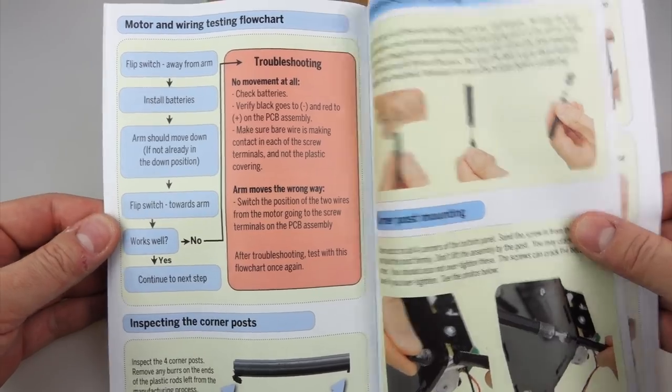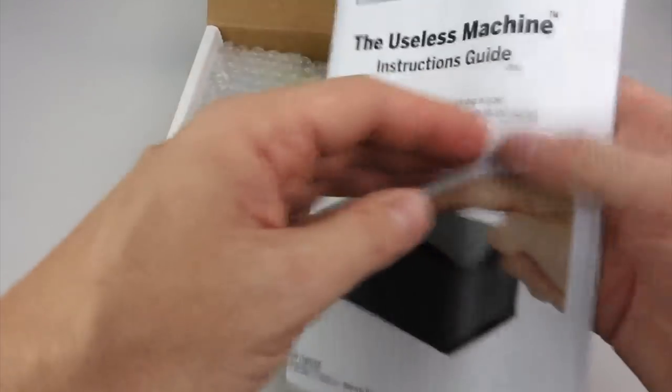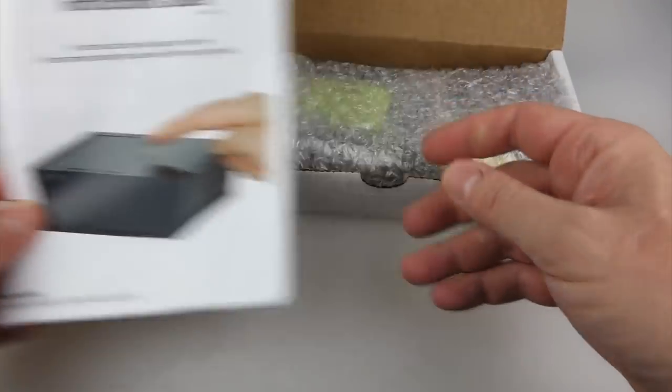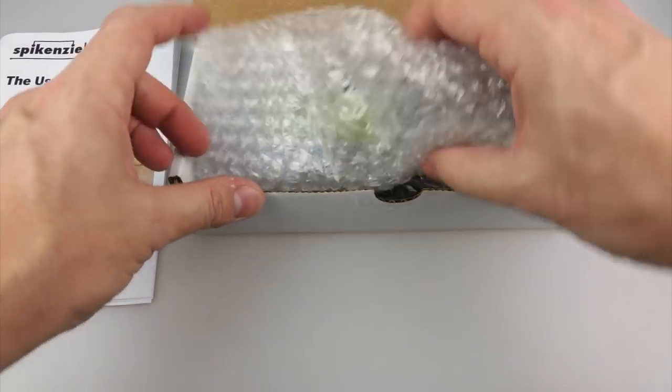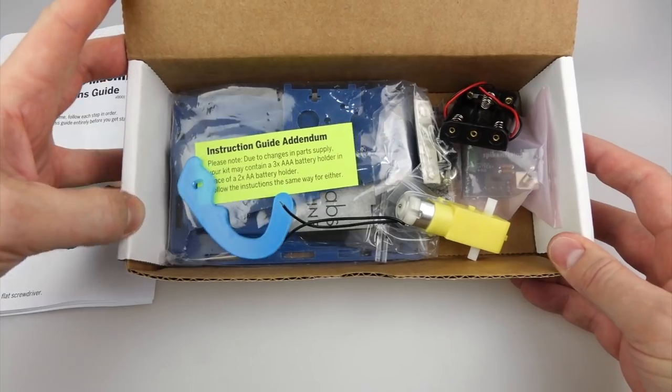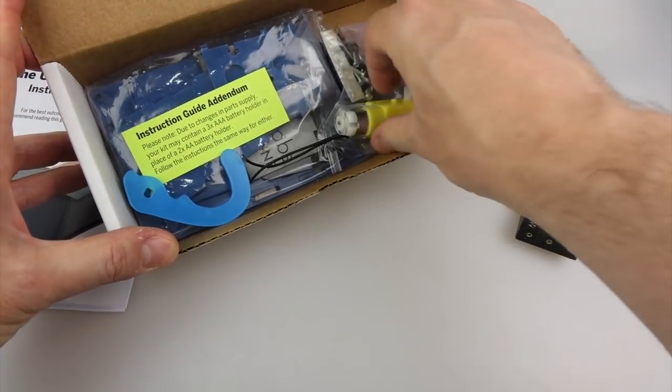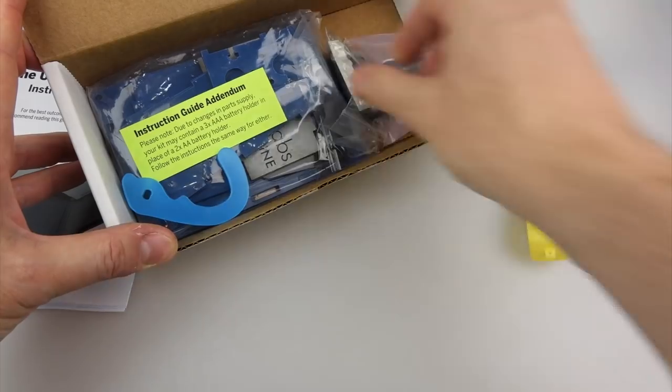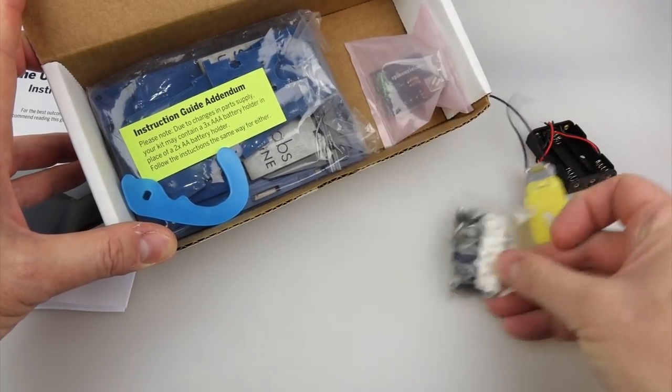Excellent thing to put together perhaps with a child and they can learn a little bit about electronics, or mechanics, or just have fun. Now let's have a look what's inside the box other than the instructions. This is the battery compartment, that's a motor, that's a bag of stuff.